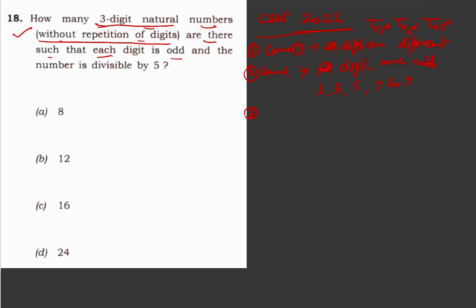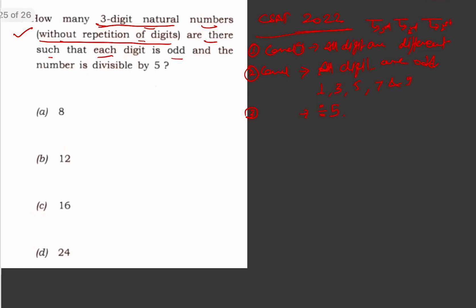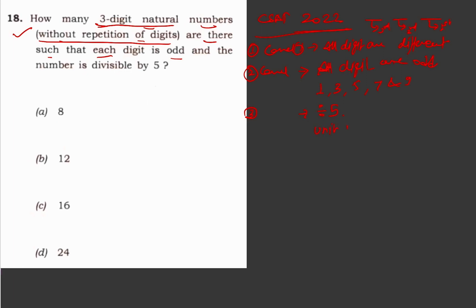The third condition is that it is divisible by 5, and for that the unit digit must be 5 because you want divisibility by 5. So now in our diagram, this 5 is fixed here, this is locked. Now you are left with digits 1, 3, 7, and 9.